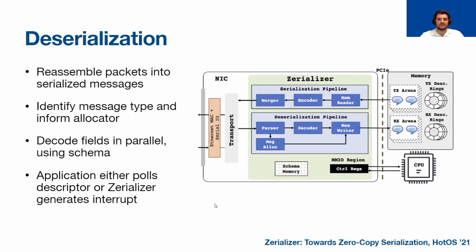Deserialization is essentially the inverse process. The one catch is that, as opposed to serialization, the serializer actually manages memory management, so there is an additional allocator module. The parser module identifies the message type and informs the allocator, which uses the message schema to allocate it in the receive arena. The decoder, similar to the encoder, uses the schema to transfer message fields in parallel and write them into the allocated message object. Finally, the serializer creates a received descriptor, and either the application can poll the descriptor or the serializer can be configured to generate an interrupt.